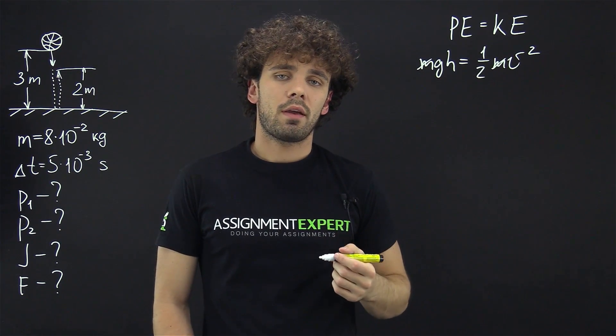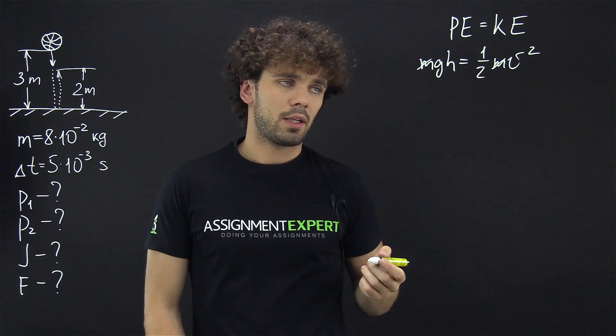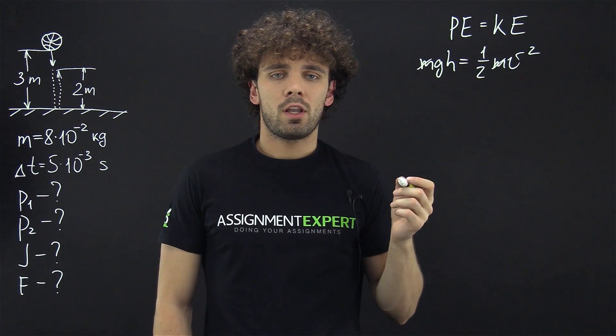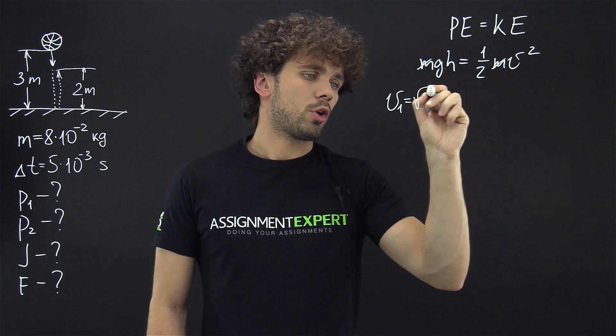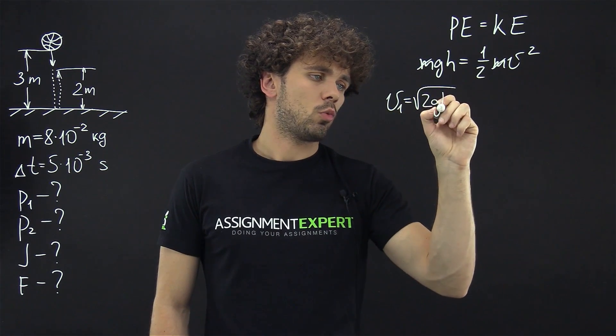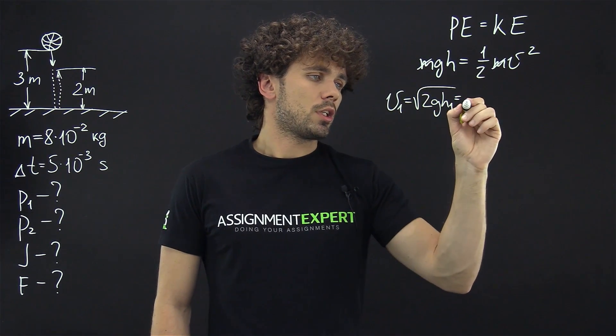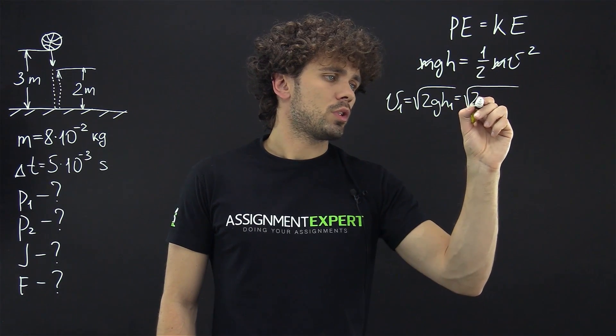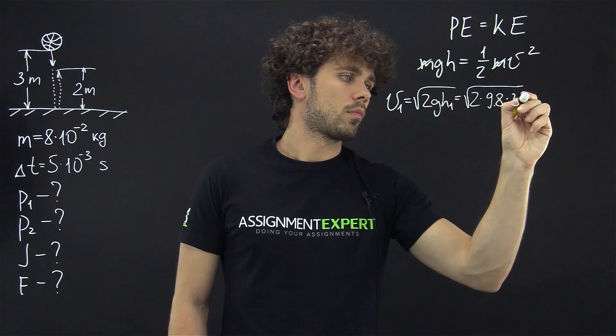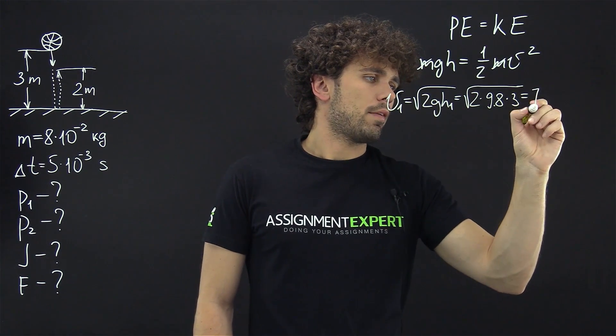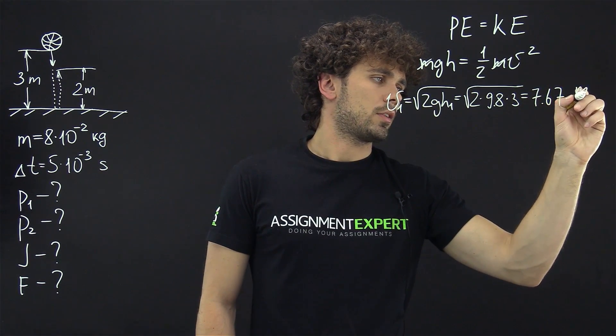Let's find velocity of the ball before and after the collision. First the velocity of the ball before the collision: v1 equals the square root of 2gh1 which is equal to the square root of 2 times 9.8 times 3. And we get 7.67 meters per second.